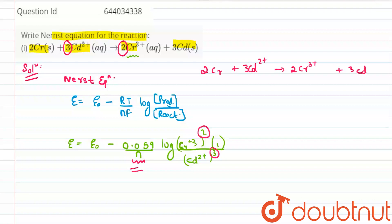What you can see is that for each molecule of cadmium, 2 electrons are transferred as the oxidation number here is 0. For 3 molecules, because it is 3 present over here, 6 electrons will be transferred, and this 6 will come in our equation.